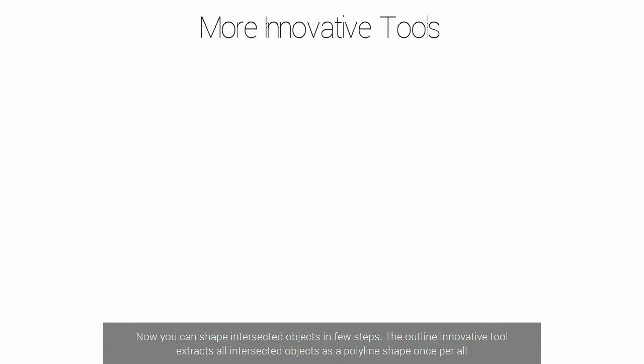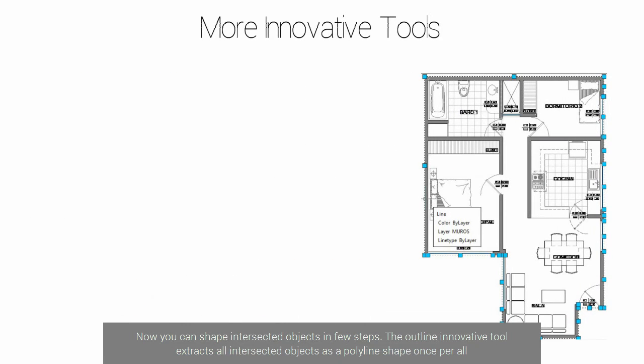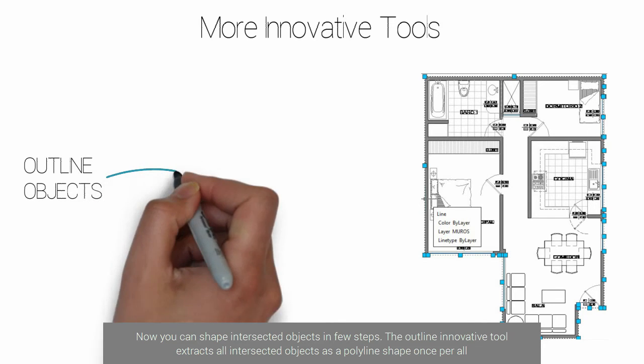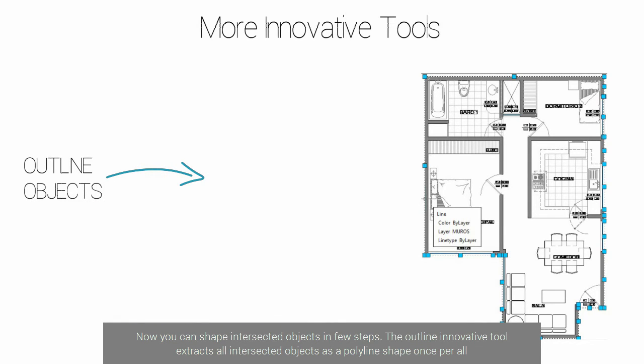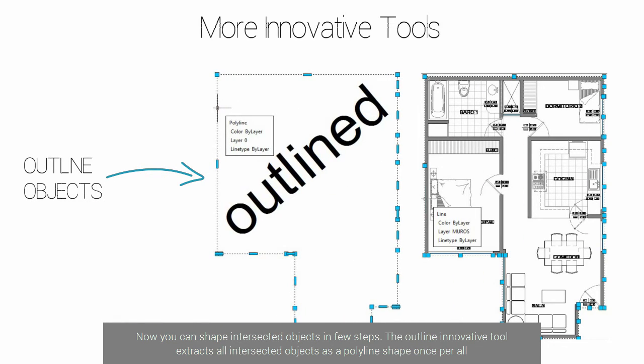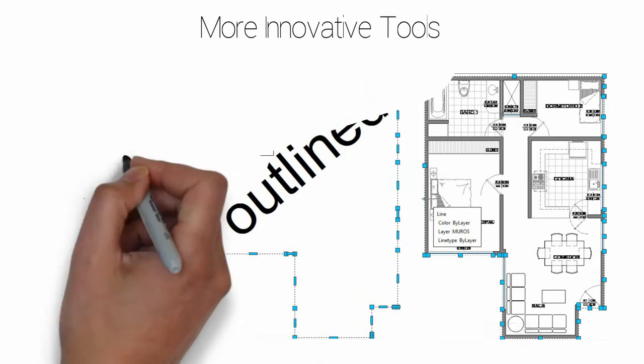Now you can shape intersected objects in just a few steps. The outline innovative tool extracts all intersected objects as a polyline shape once for all.